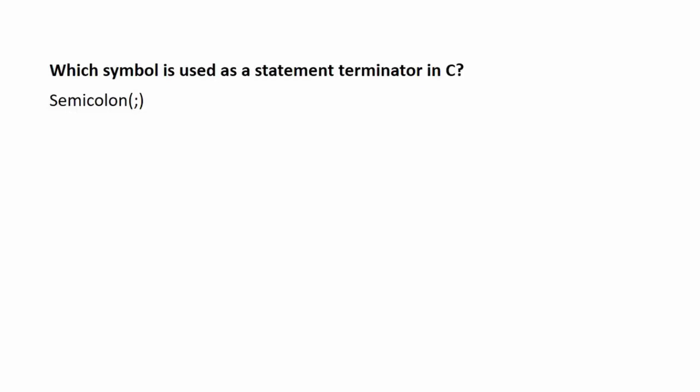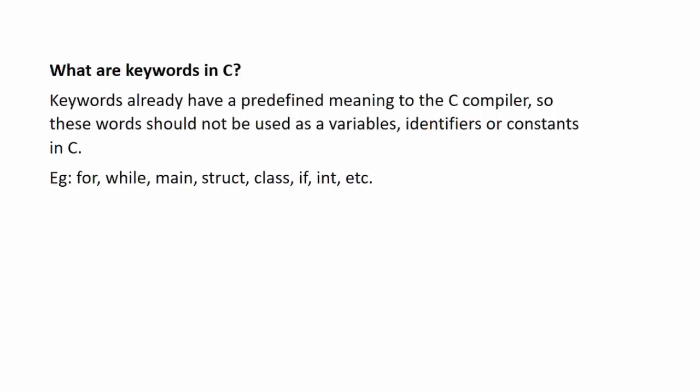Next question: which symbol is used as a statement terminator in C? Semicolon is that symbol which is used as a statement terminator in C. That means if one statement is written and after its ending we have to use a semicolon, otherwise there will be an error, as that statement will never be terminated without the semicolon.